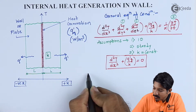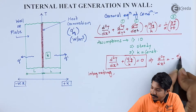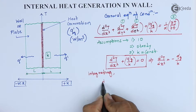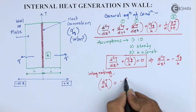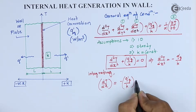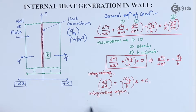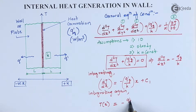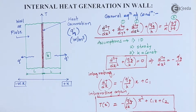Now let us try to solve this equation. We need to integrate it twice. After the first integration, dt/dx equals minus q_dot_g upon k times x plus constant c1. Integrating again, temperature T as a function of x equals minus q_dot_g upon k times x-squared over 2, plus c1·x plus c2. Let us call this equation number one.